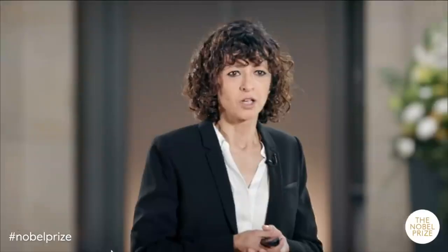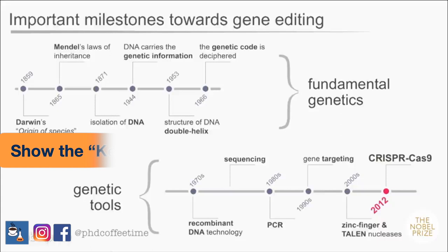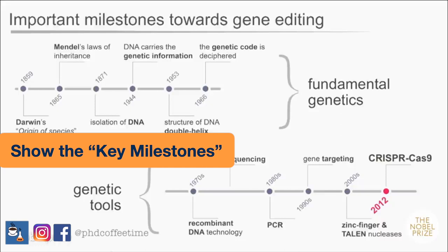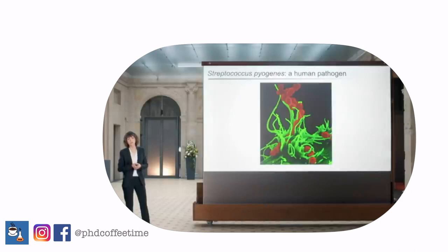Emmanuelle Charpentier also presented a timeline of the technology enabling us to modify genes, highlighting the important milestones on this slide. This is a quite common approach when introducing a research topic — you present the overview to the audience via a timeline. I've already spoken in another video about Research Rabbit, and how easy it is to create a timeline using your relevant milestone papers.